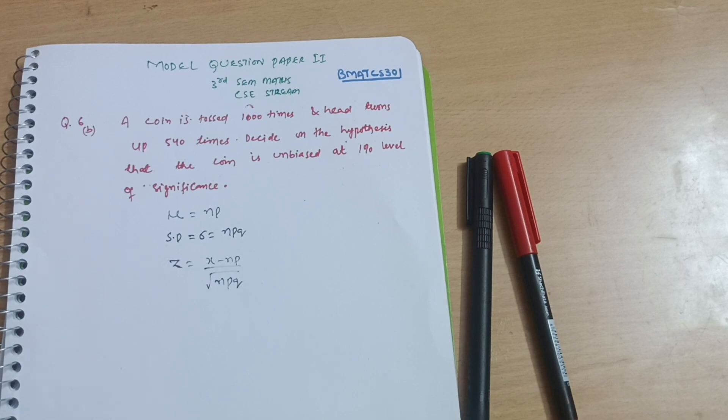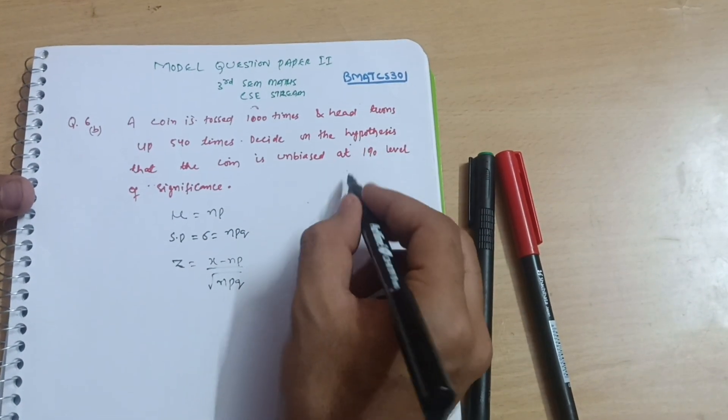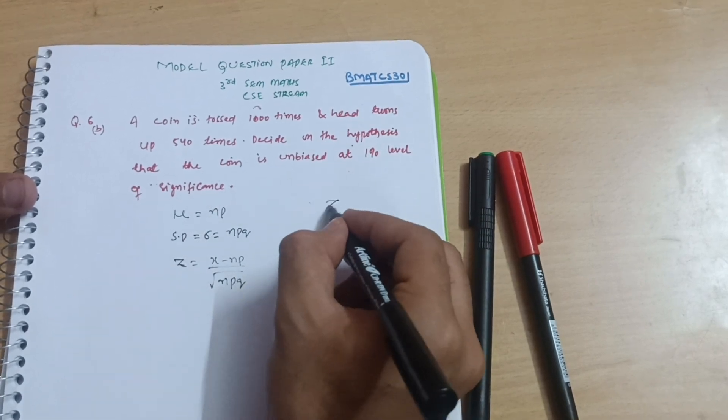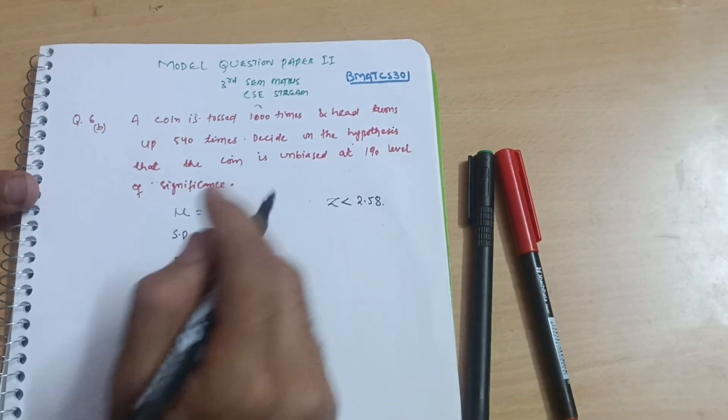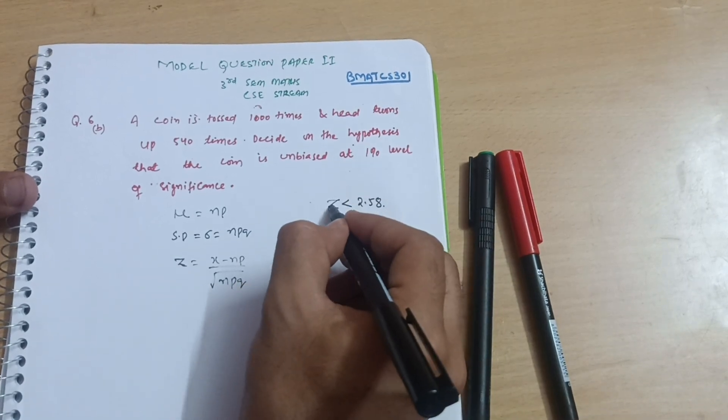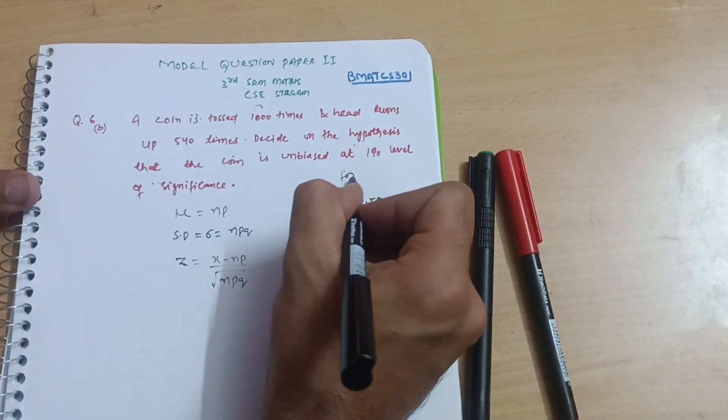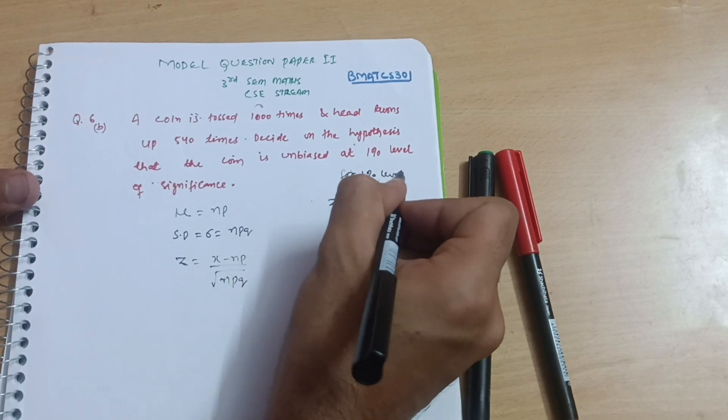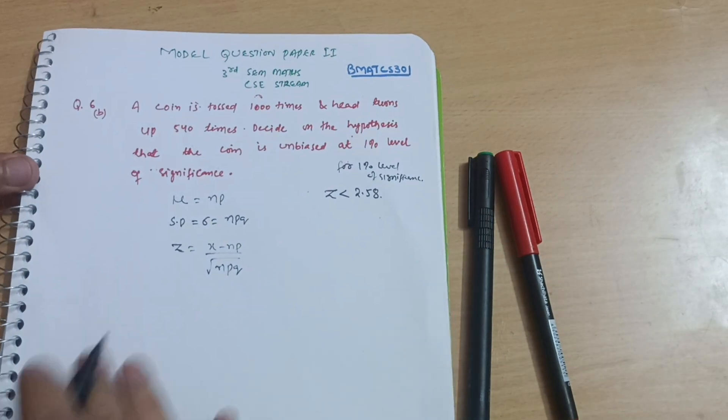Now for this particular case, one percent level of significance, z should be less than 2.58. This is the standard tabulated value for one percent level of significance. Now what is the probability we have to calculate, and how many times the coin is tossed?